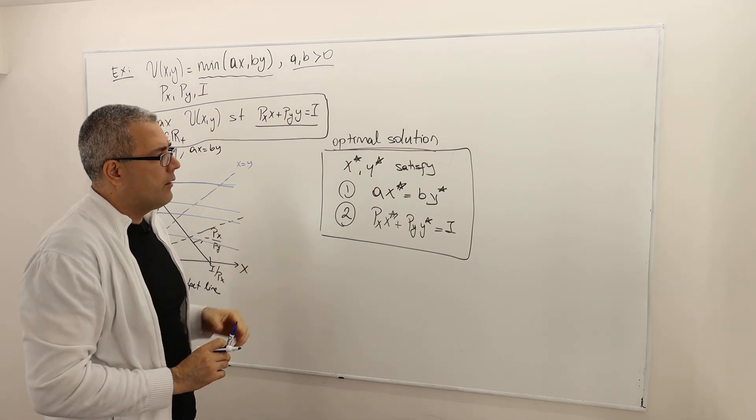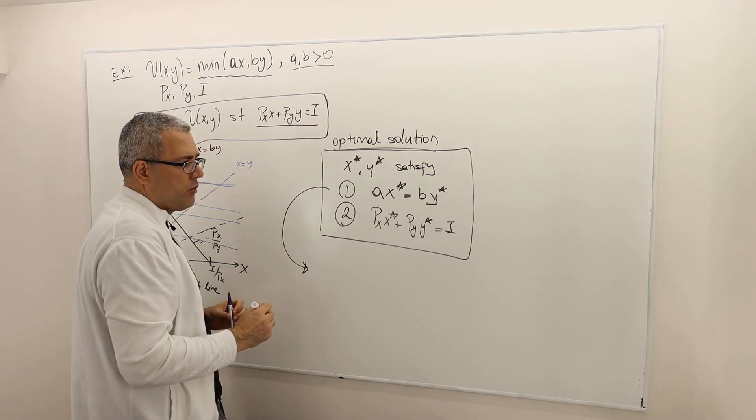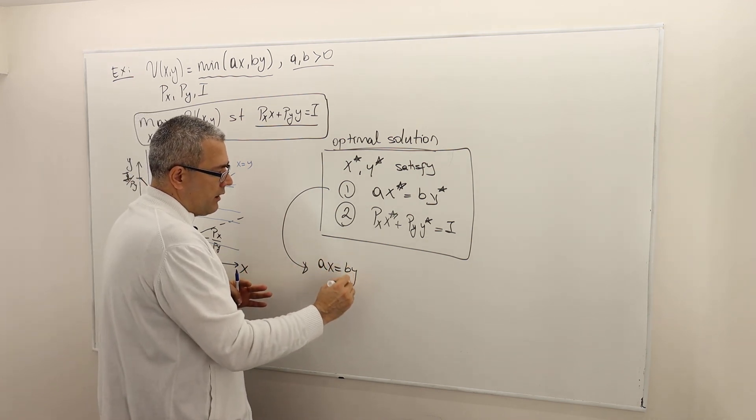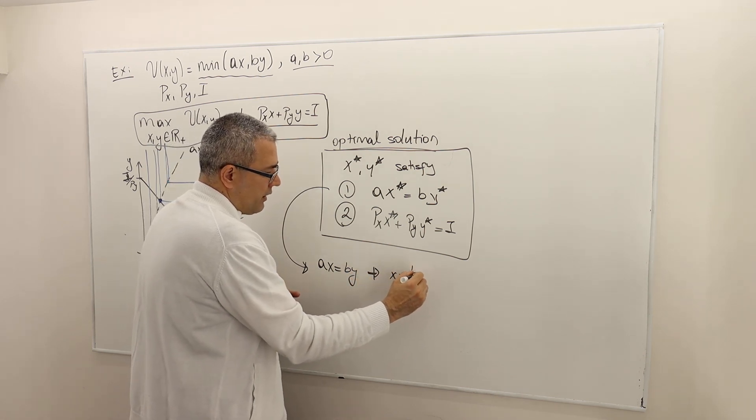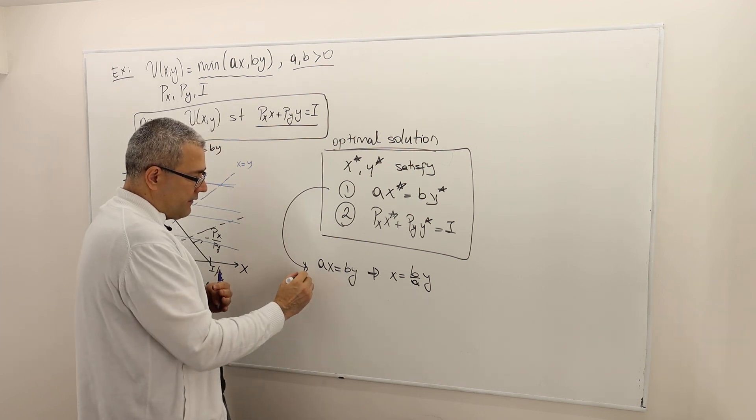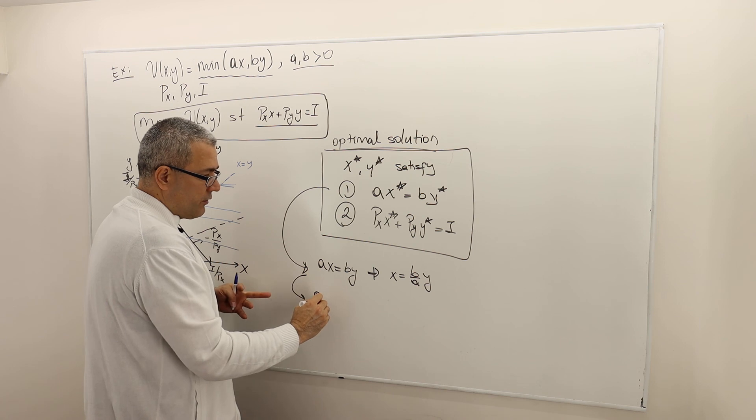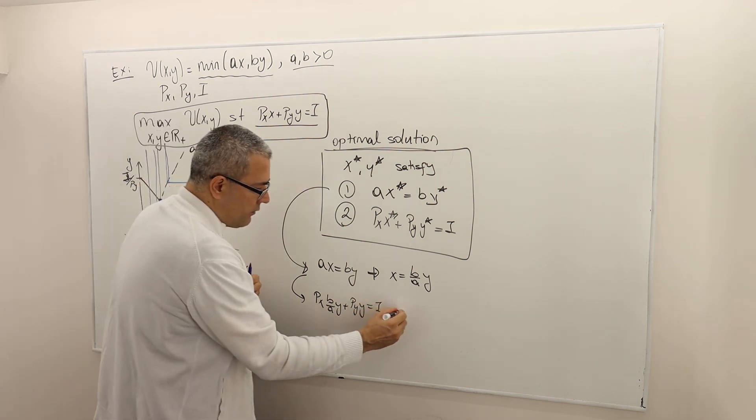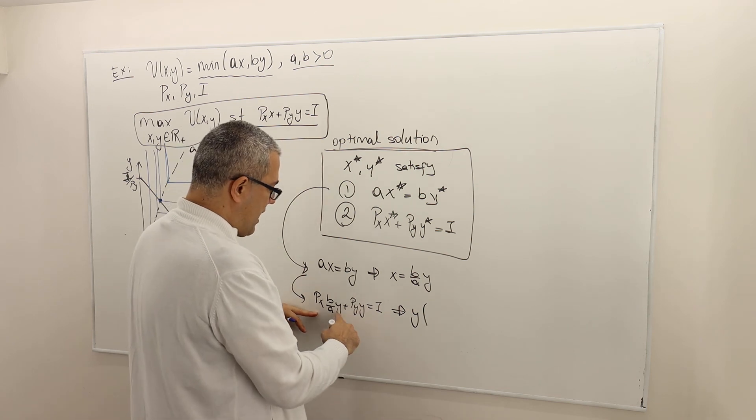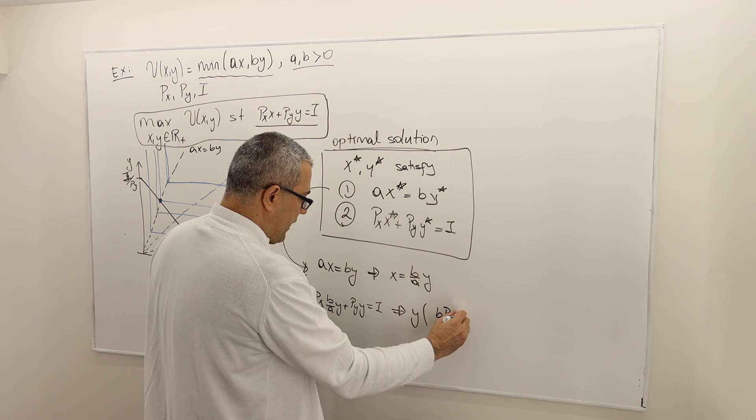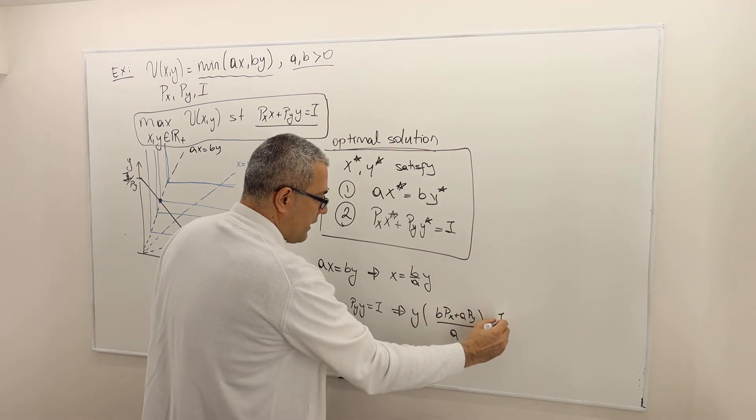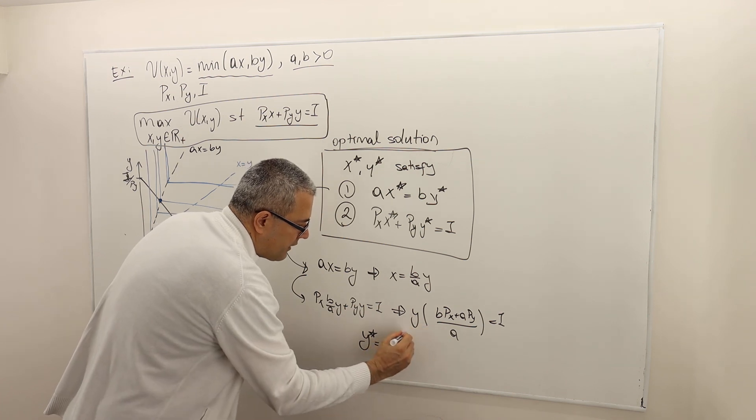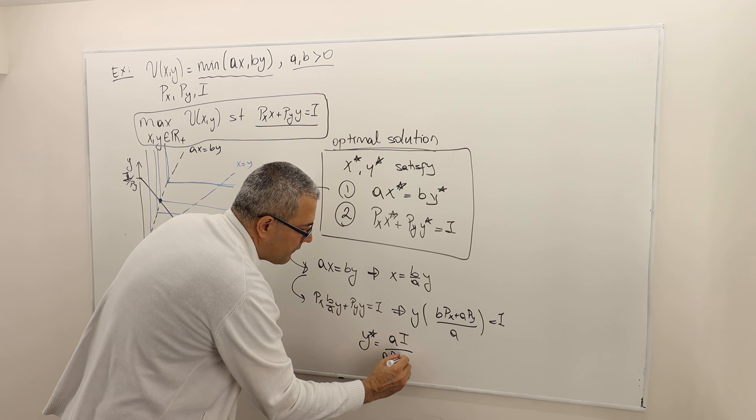Well, for this specific example, how do we solve it? Well, I mean, let's use it. The first equation. Forget about stars for now, I can put the stars at the end, but the solution must satisfy AX equals BY. So I'm just going to leave X alone, so I'm going to write B over AY. So I'm going to plug this into the second constraint, so it's PX, instead of X, I'm going to write B over AY plus PYY equals income. So I would like to leave Y alone, which basically means when I take the Y parentheses here, I will have BPX plus APY divided by A equals income. So voila, I found Y star. So now I can put star because I found the value. It's basically A times income divided by APY plus BPX.